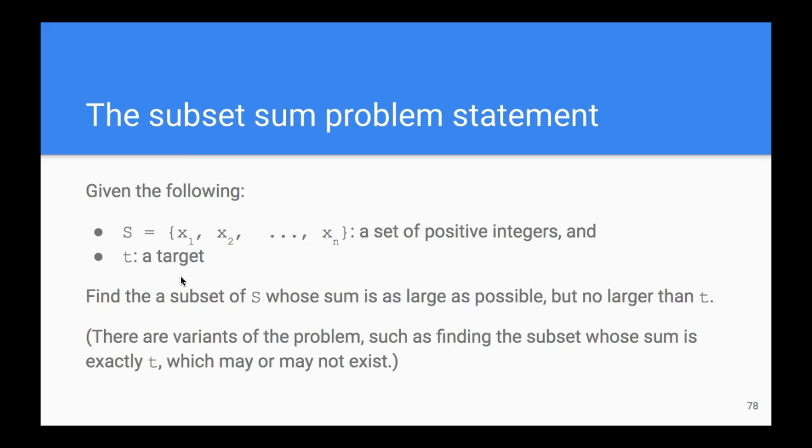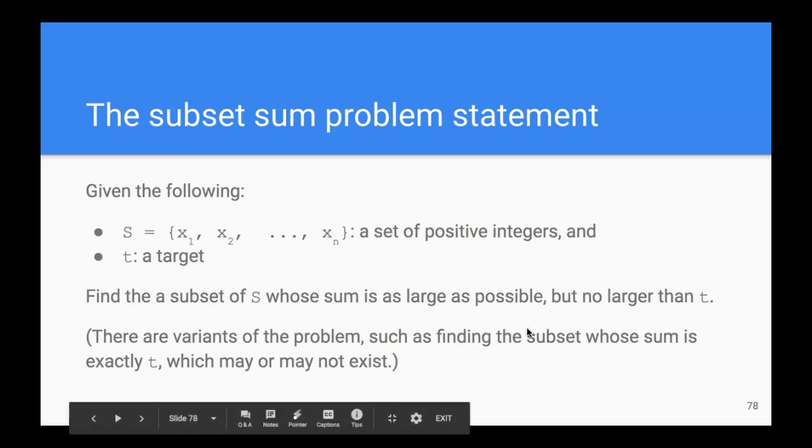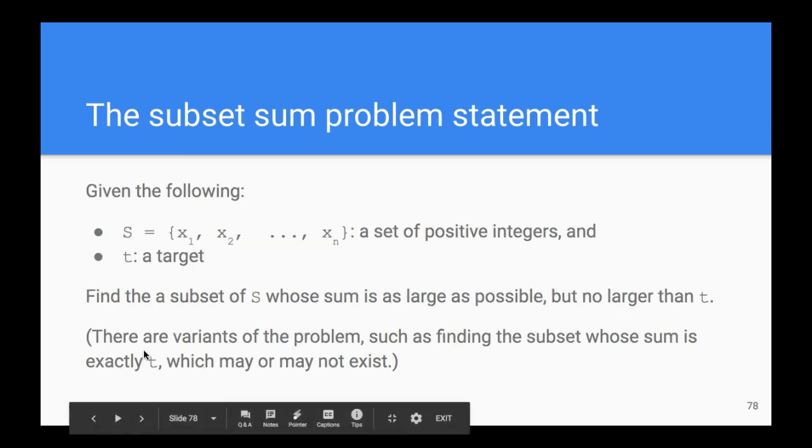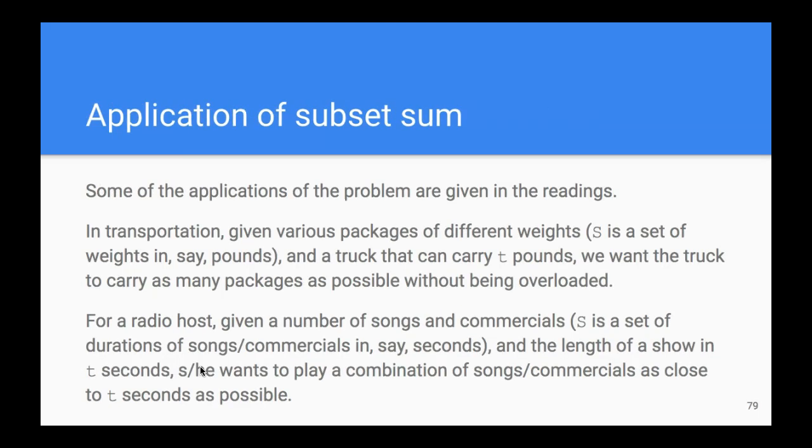This is one variant of the problem. There are other variants of the subset sum problem, such as finding a subset whose sum is exactly t. In our case, we want to find the sum that is less than or equal to t. A subset whose sum is exactly t may exist or may not exist.